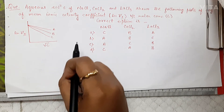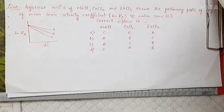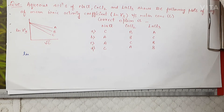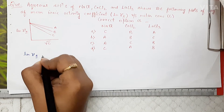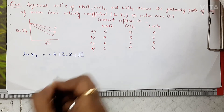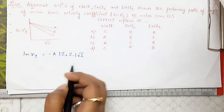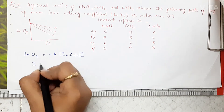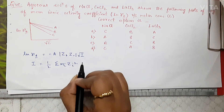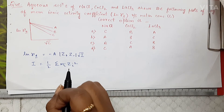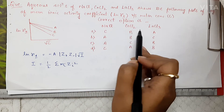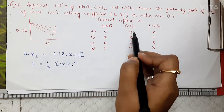Now we'll move on to the question asked as a doubt. To solve this question, you should know the Debye-Hückel equation and the formula for ionic strength: I = ½ Σ mᵢzᵢ². We have been given three types of ionic solids: NaCl, CaCl₂, and LaCl₃.